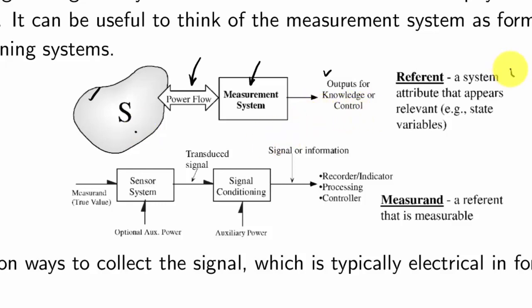One of the terms that you might find in measurement science is the term referent, which refers to some attribute of the system that is relevant. For example, in systems concepts, you learn about state variables. So you might have a referent that's specifically a state variable. But there can be other types of referents that you're interested in. A measurand is a term used to refer to any referent that is also measurable. So you might have a bunch of referents, but not all of them are measurable.